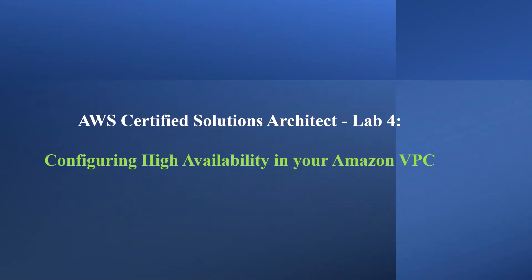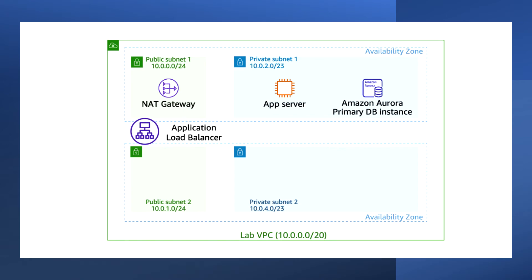Hello everyone, welcome back. In this video we will see the hands-on lab 4 for Solution Architect, which is configuring high availability in your Amazon VPC. AWS provides services and infrastructure to build more reliable, fault-tolerant, and highly available systems in the cloud. Fault tolerance is a system's ability to remain in operation even if some of the components used to build the system fail. High availability is not about preventing system failure, but the ability of the system to recover quickly when there is any failure.